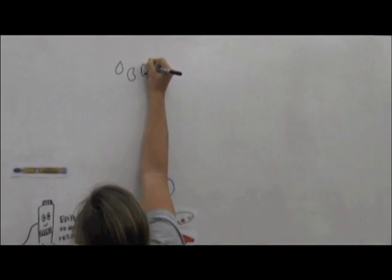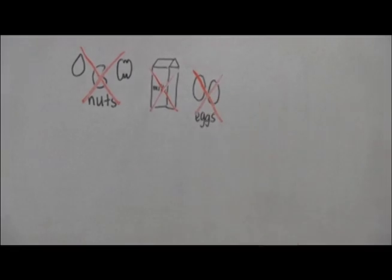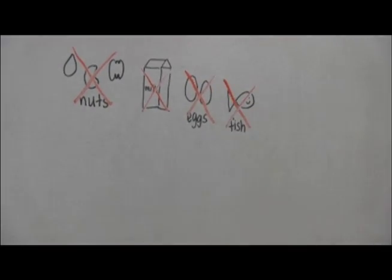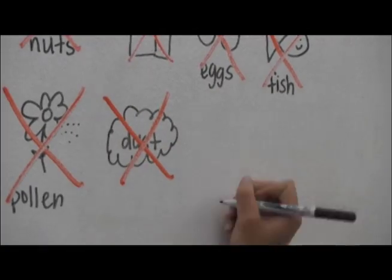And remember, it's not just peanuts that kids can be allergic to. A person can be allergic to all kinds of foods, or even things that aren't food. As you can see, there are lots of things that someone could be allergic to, and you would not even know it until they started having a reaction.